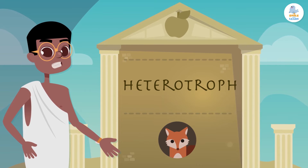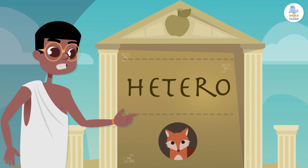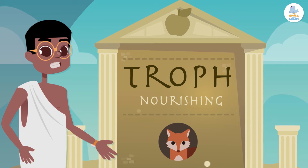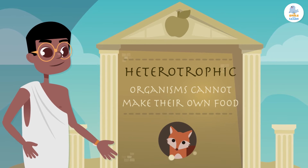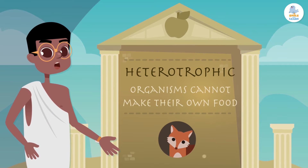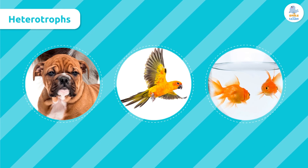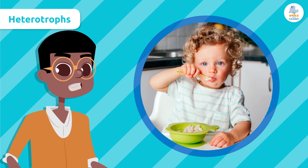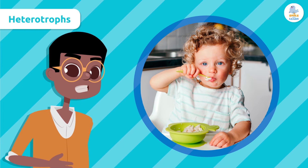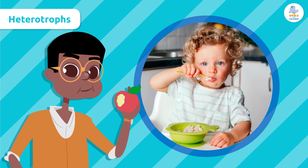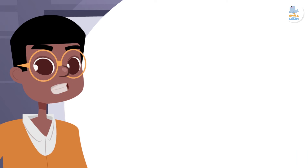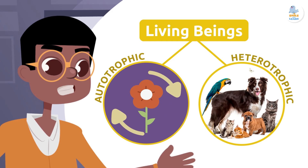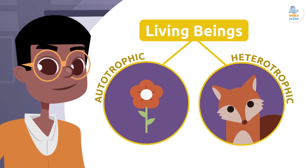The word heterotroph also has a distinct definition — heteros means other, and troph means nourishing. This means that heterotrophic organisms cannot make their own food; they must eat to obtain energy and survive. Animals, including humans, are an example of heterotrophic organisms — they consume food from an outside source to obtain energy for their day-to-day activities. So there are autotrophic organisms that produce their own food and heterotrophic organisms that obtain nutrients from other organisms.